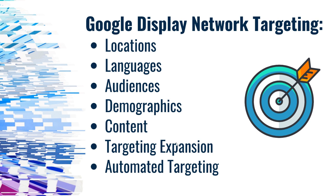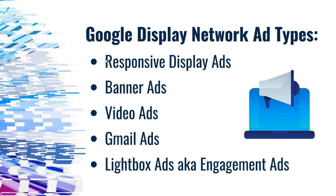If you're going to start running advertisements, you probably want to be familiar with the targeting and the ad types. You can set your targeting based on locations, languages, audiences — and there are a lot of different audiences you can target — demographics, and content. You can use targeting expansion to expand your existing audiences, and there are automated targeting options as well. The main ad types are responsive display ads, which is actually the default ad type for display network campaigns, banner ads, video ads, Gmail ads, and lightbox ads, also known as engagement ads.